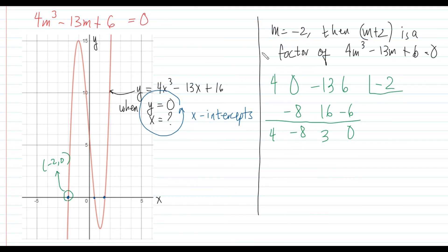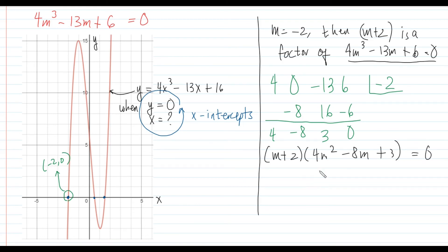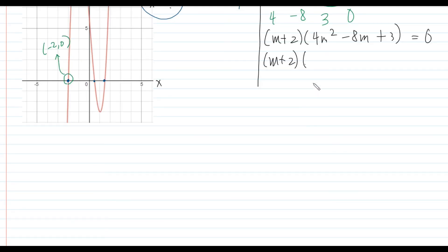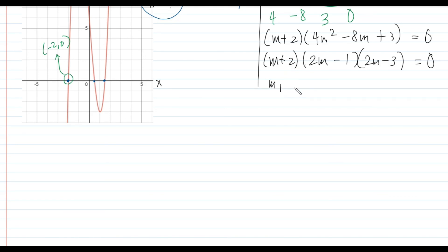Therefore, the auxiliary equation factors as (m + 2)(4m² minus 8m + 3) equals 0. Factoring the quadratic 4m² minus 8m + 3 gives (2m minus 1)(2m minus 3) equals 0. So we now have three values of m: m₁ equals negative 2, m₂ equals 1/2, and m₃ equals 3/2.